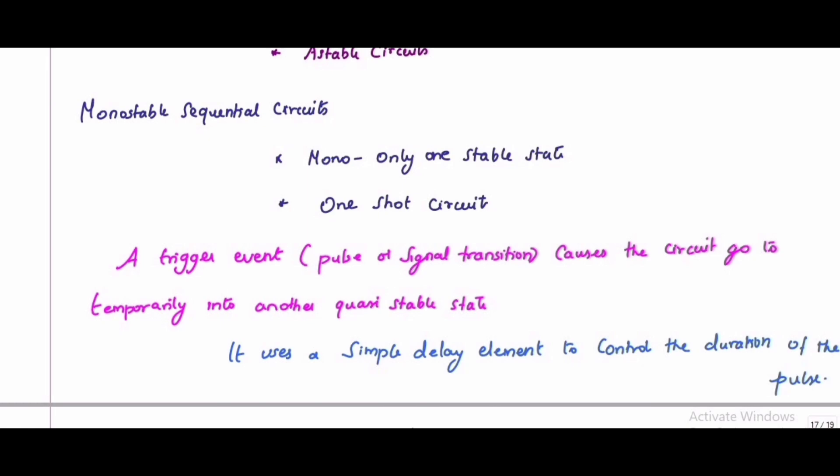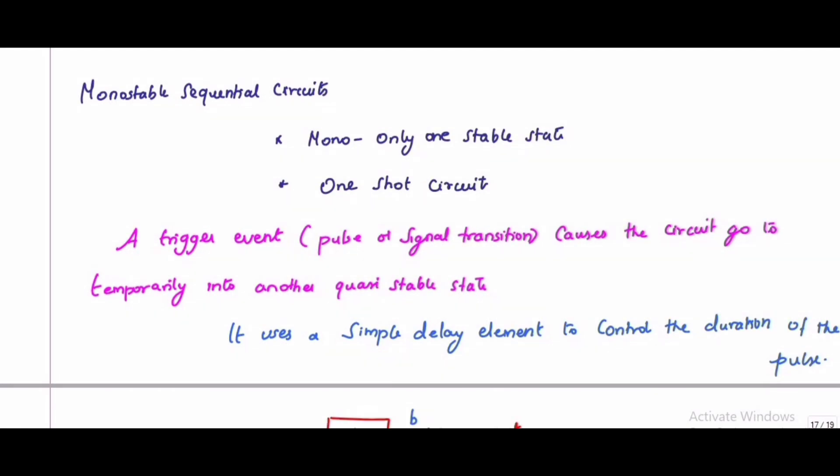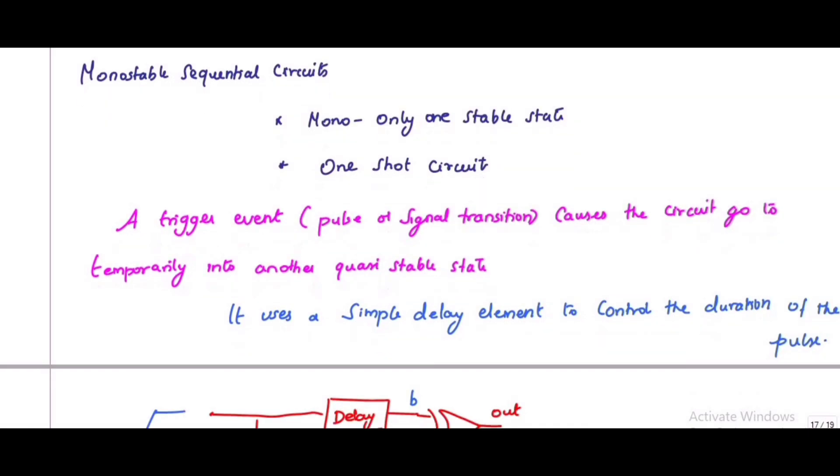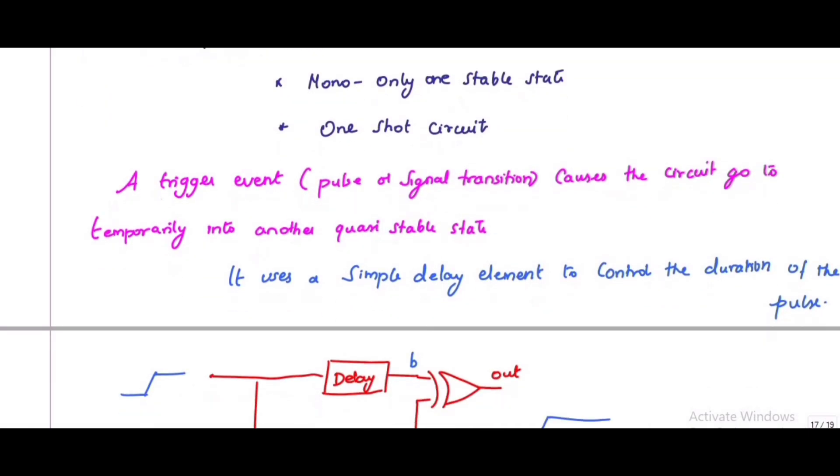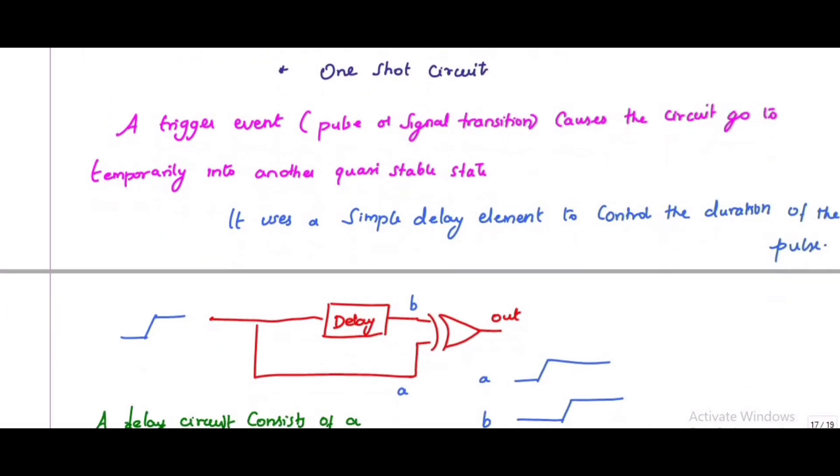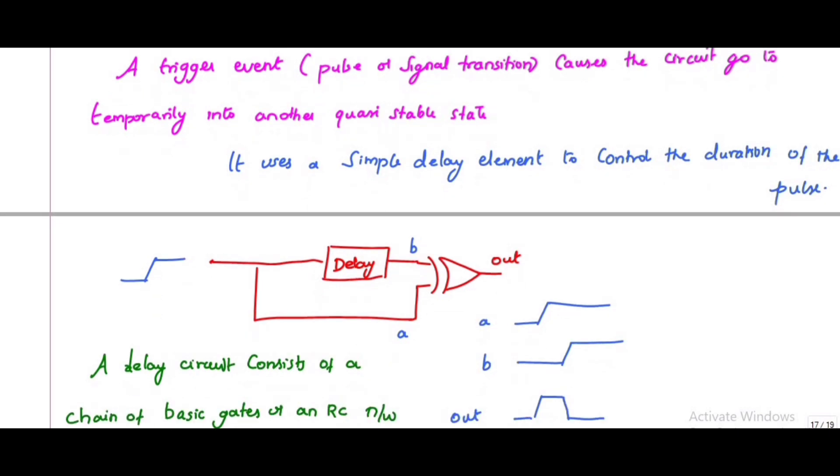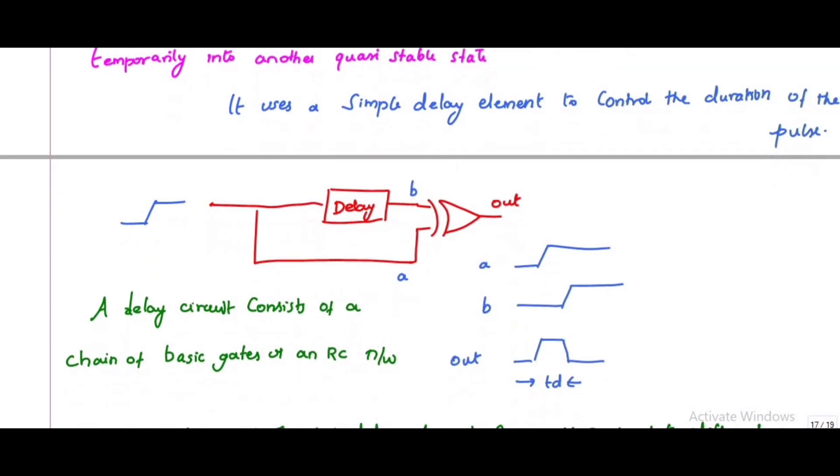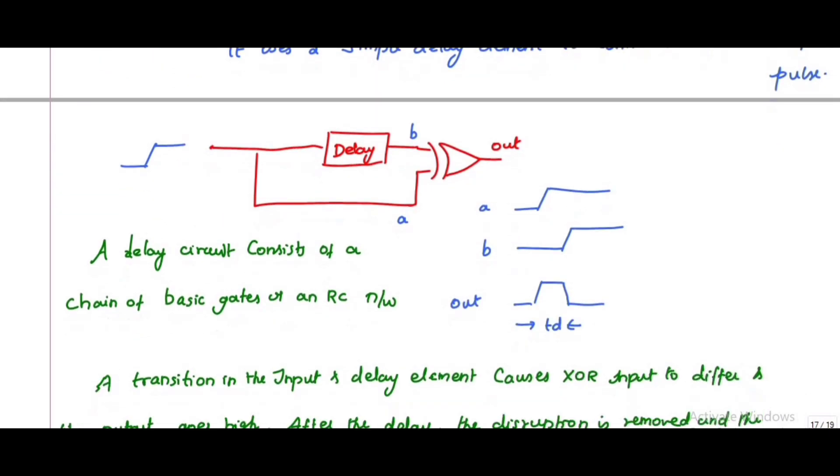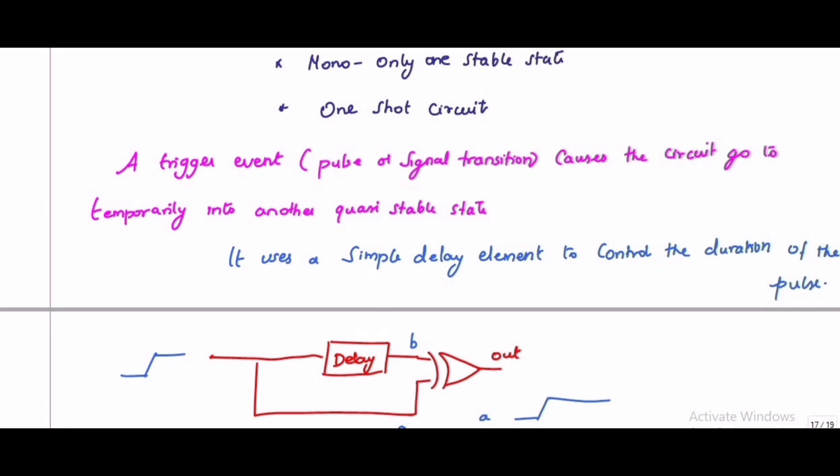Here a trigger event, which is either a signal transition or a pulse, will cause the circuit to go temporarily into another quasi-stable state. This means it eventually returns to its original state after a time period determined by the circuit parameters.